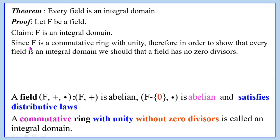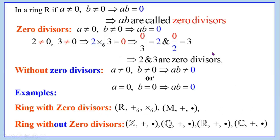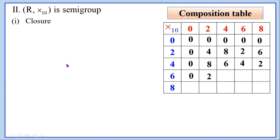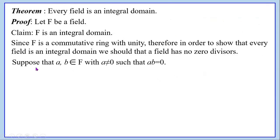If we want to show that f is an integral domain, since f is a commutative ring with unity, in order to show that every field is an integral domain we need to show that a field has no zero divisors. That is: a ≠ 0 and b ≠ 0 implies a·b ≠ 0, or equivalently, a·b = 0 implies a = 0 or b = 0. This is the concept of without zero divisors. Therefore, in this theorem, we have to show that a field has no zero divisors.